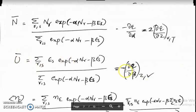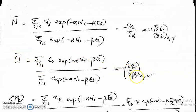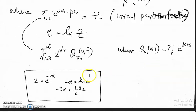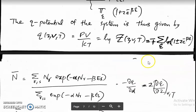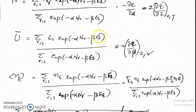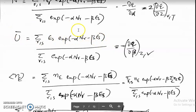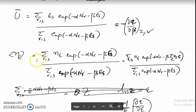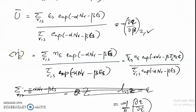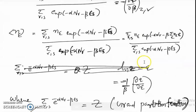The average energy is −∂Q/∂β, since when differentiating the log of the grand partition function with respect to β, E_s comes outside. The mean occupation number n_ε — the average number of particles in a single-particle level of energy ε — is −(1/β)·∂Q/∂ε.